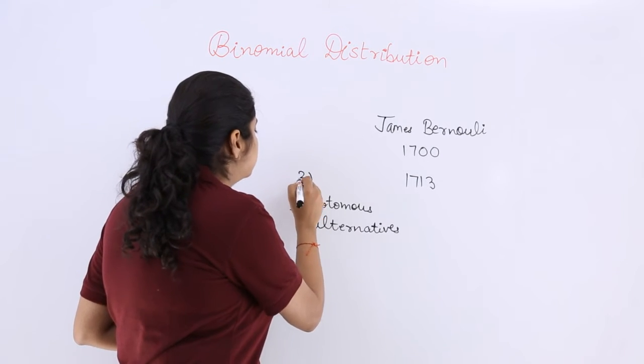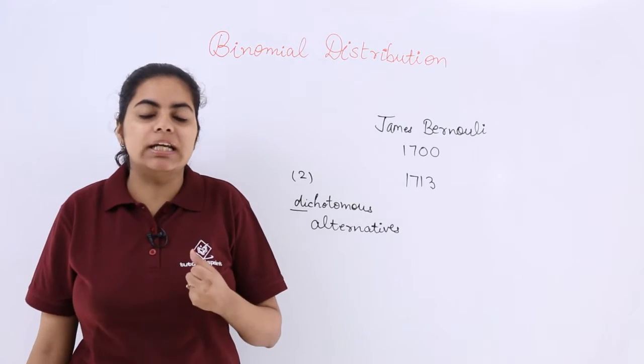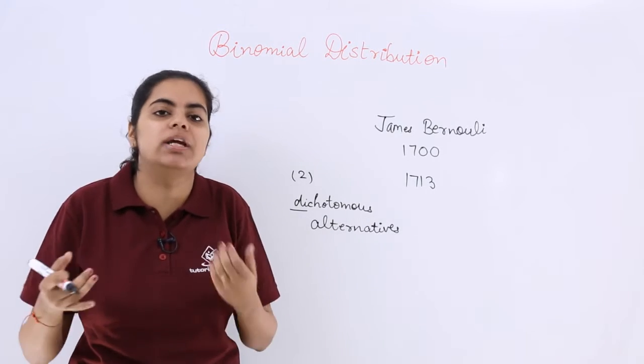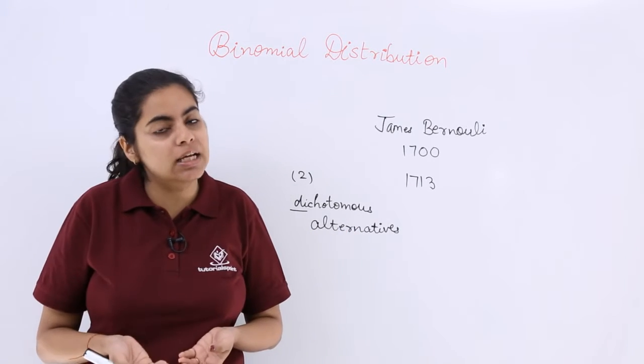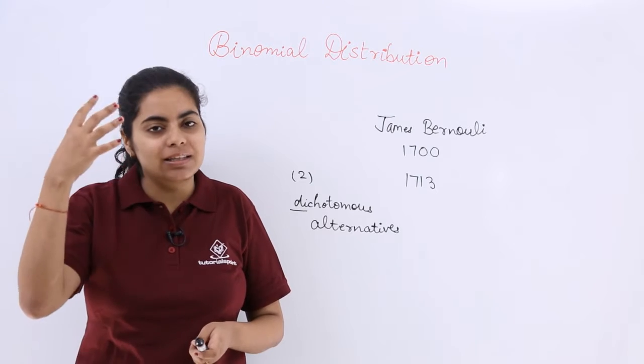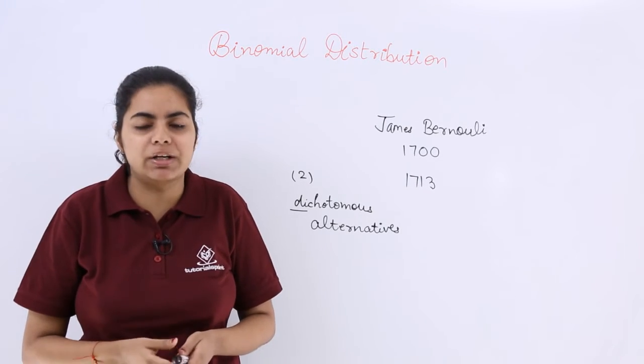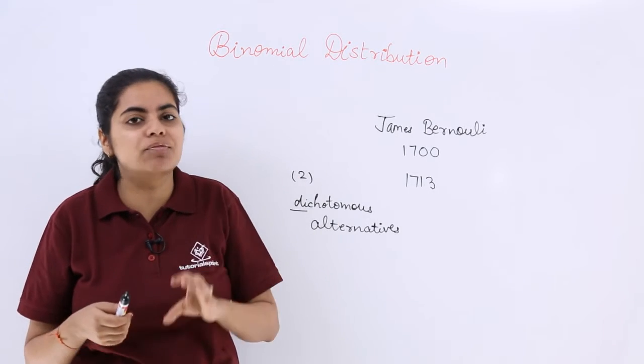Now di means two. So dichotomous alternatives are the alternatives which may result in success or failure. Like I say tossing of a coin, it may be a head or a tail result. Like the manufacturing of a product, it may be defective or non-defective. So there is always a scope for success or failure.